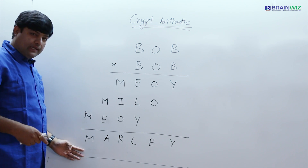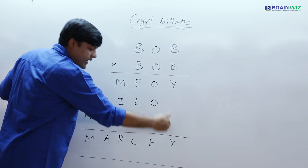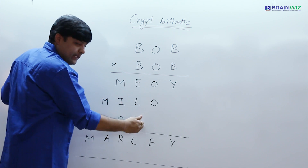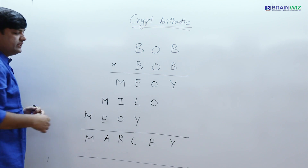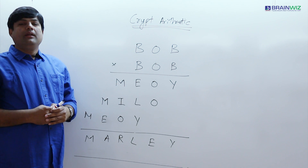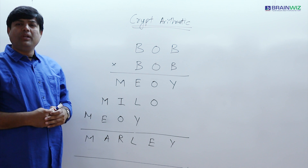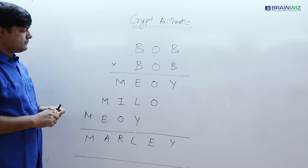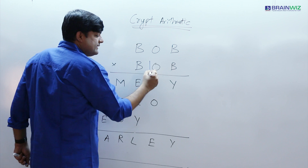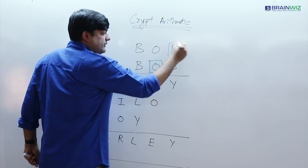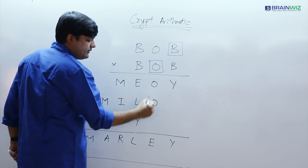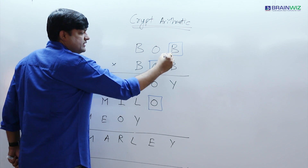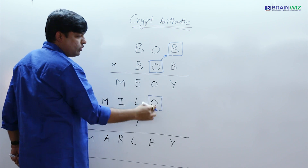And how do we get MARLEY? We get MARLEY by Y plus O gives E, then E-L-Y makes L, and same fashion we have all this. Now here, a small hint of the question is that when I multiply O with B, I am getting O back. You see the multiplication — the second row: O into B gives you O.